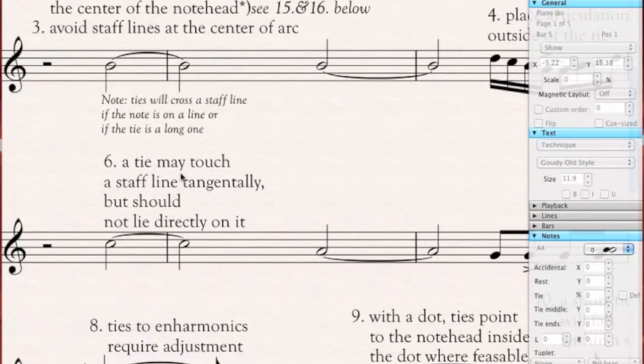Now, a tie may touch a staff line tangentially, but should not lie directly on it. So here, the tie comes very close to the line, almost touching it. That's what I mean by tangentially. The staff line is a tangent to the arc of the tie. Same thing in this situation. It's very close, but the tie is in the space, just touching the staff line.